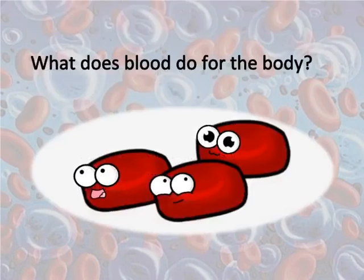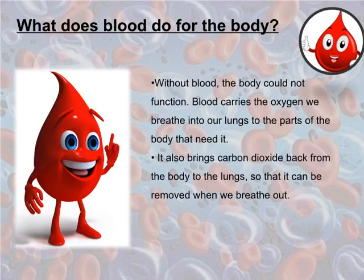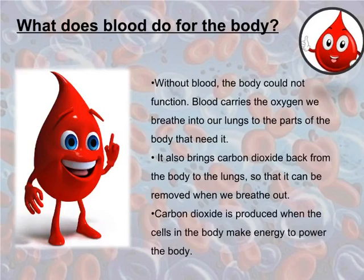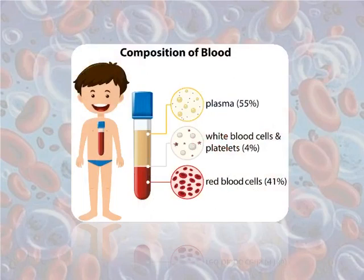What does blood do for the body? Without blood, the body could not function. Blood carries the oxygen we breathe into our lungs to the parts of the body that need it. It also brings carbon dioxide back from the body to the lungs so it can be removed when we breathe out. Carbon dioxide is produced when the cells in the body make energy. Plasma makes up approximately 55% of blood, red blood cells 41%, and white blood cells and platelets 4% altogether.